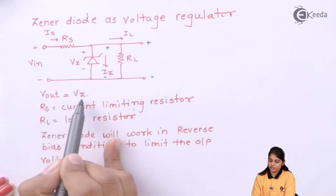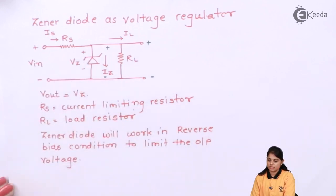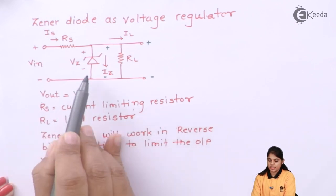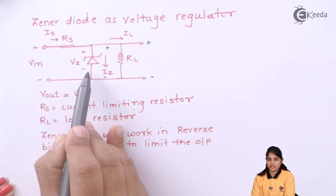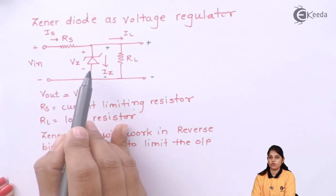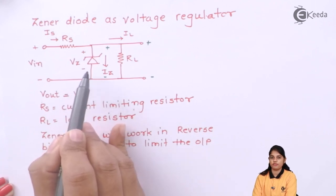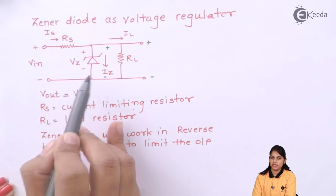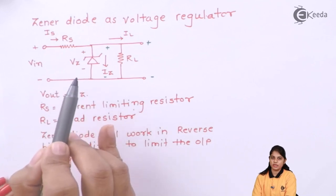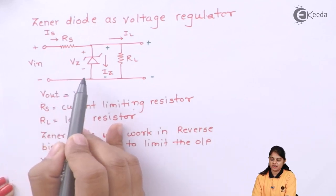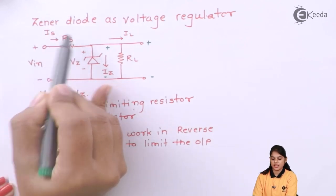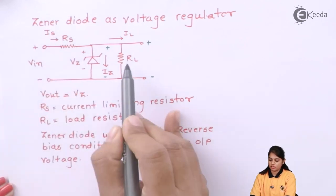Here it is mentioned that Vout is nothing but the voltage across the Zener diode. RS is a current limiting resistor because as per the characteristics we have studied for a Zener diode, there is a large amount of current flow when it is reverse biased. Even though the voltage is limited, voltage has some limitations, current keeps on increasing. To limit the current, we need to have a resistance RS. RL is a load resistance.